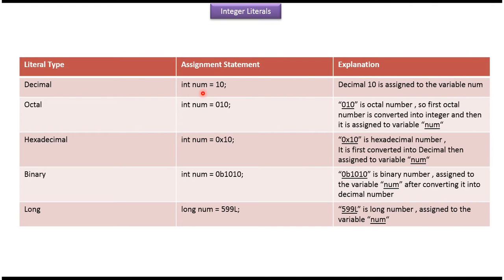This is how we can define decimal number. Here decimal 10 will be assigned to variable num. And this is how we can define octal number. Here this octal number will be first converted into decimal number, then the decimal number will be assigned to variable num.